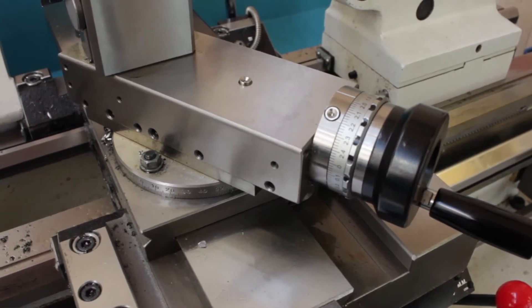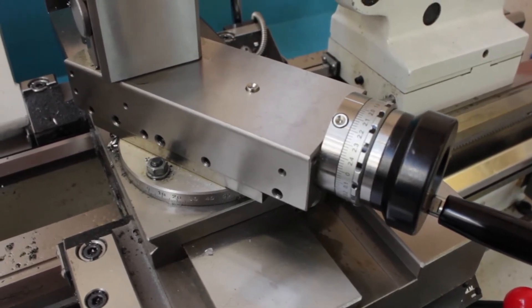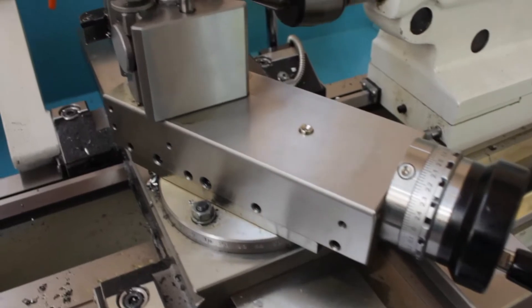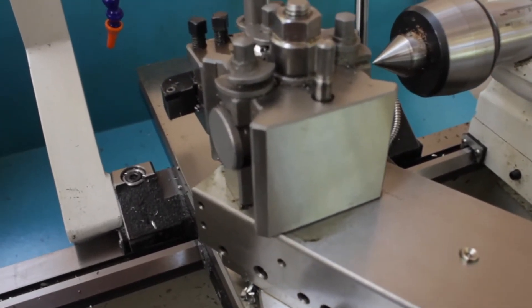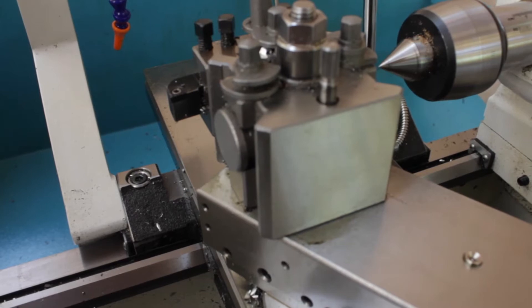The machining of this item is fairly standard. The compound slander has been set to 60 degrees and the tool post has been moved to take into account the tight angle.